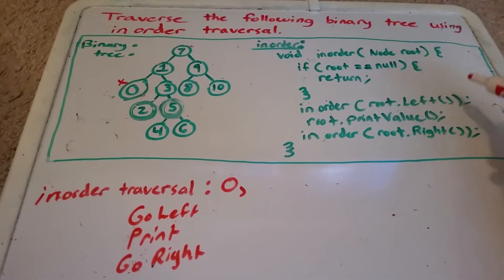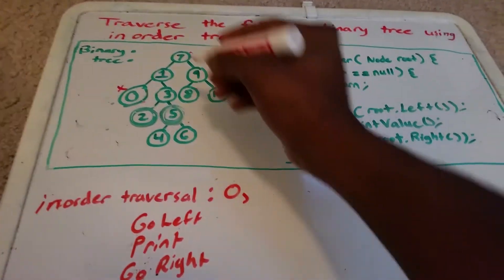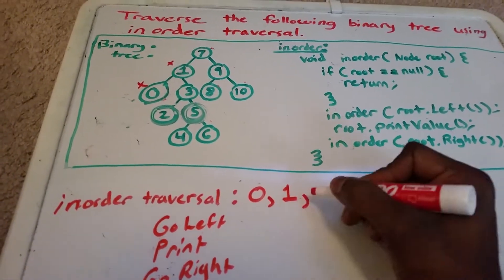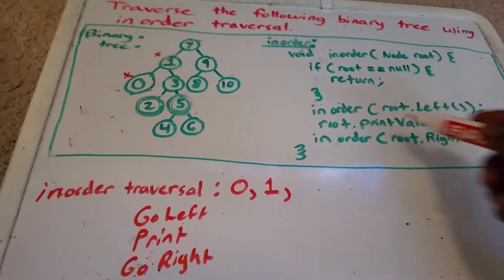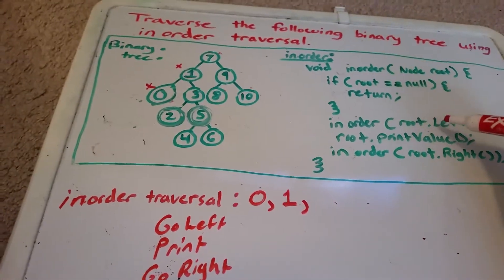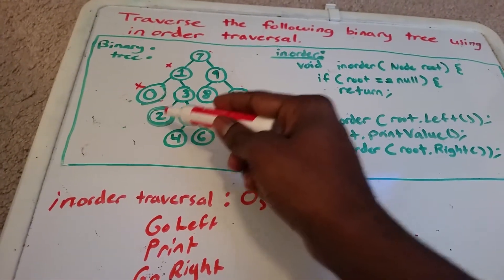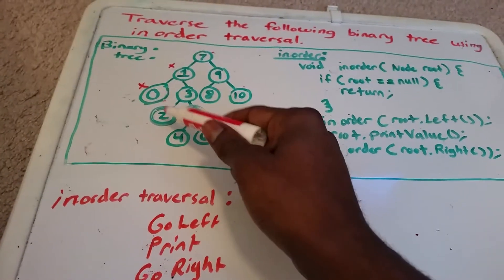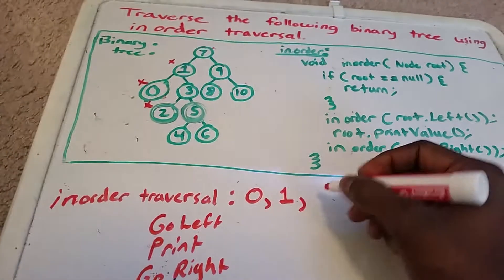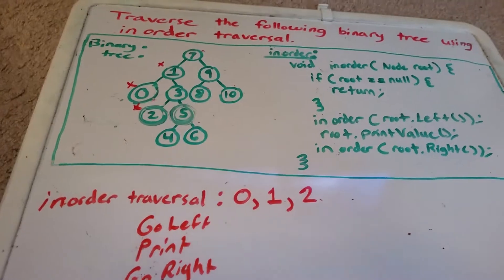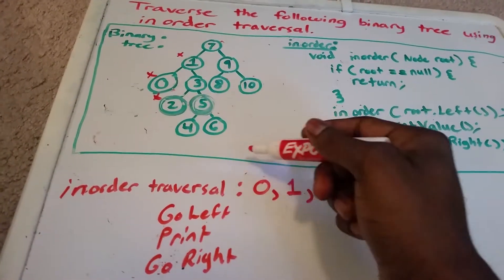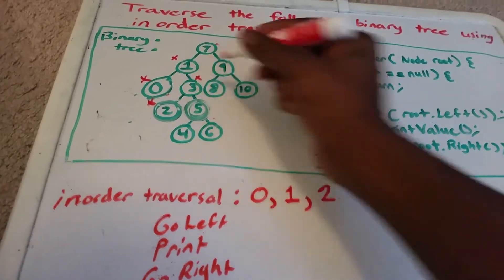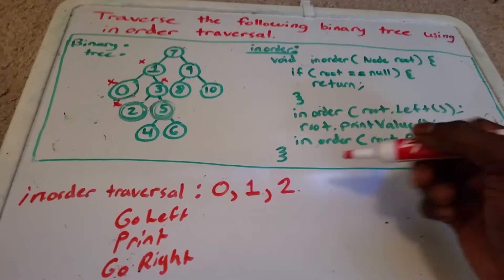We went as far left as we could, so now we're going to print that value — I'm going to put an x here each time we print. Then we want to go as far right as possible. To the right of this is a 3. 3 is not null, so we go to the left and get to 2. 2 is not null; to the left of 2 is null, so we return back to 2, print it, then go right — nothing there, so we return back to 3. We went as far left as possible on 3, so we print the value 3.